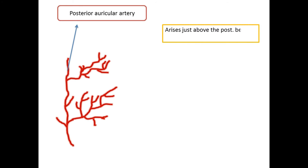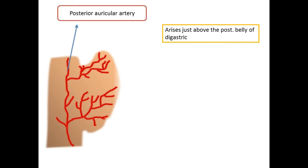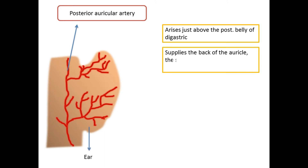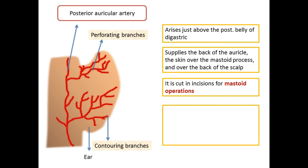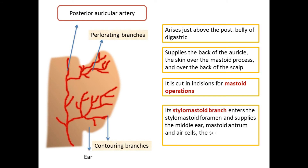The posterior auricular artery arises from the posterior aspect of the external carotid just above the posterior belly of the digastric. It runs upwards and backwards, deep to the parotid gland, crosses the base of the mastoid process, and ascends behind the auricle, supplying the back of the auricle, the skin over the mastoid process, and over the back of the scalp. It is cut in incisions for mastoid operations. Its stylomastoid branch enters the stylomastoid foramen and supplies the middle ear, mastoid antrum, air cells, semicircular canals, and the facial nerve.